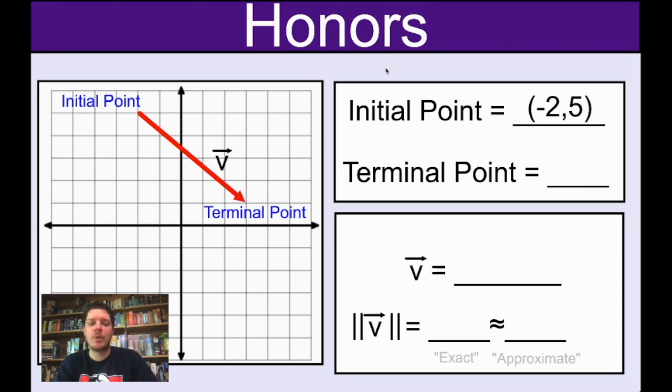The terminal point ordered pair is it's over three and up one. Remember rise over run only applies to slopes, not to ordered pairs. So that's the initial point and the terminal point.